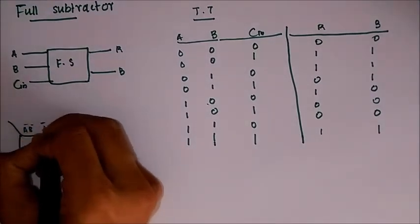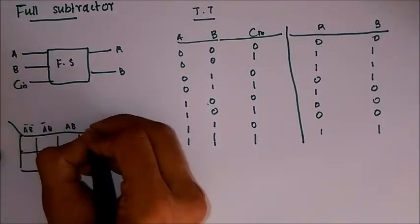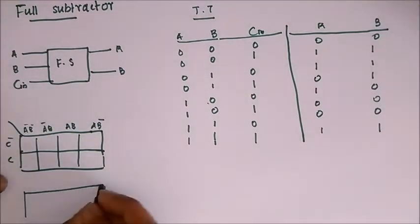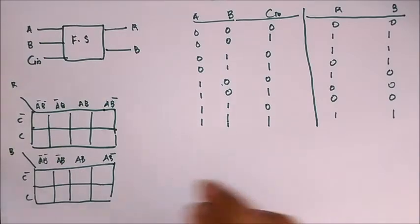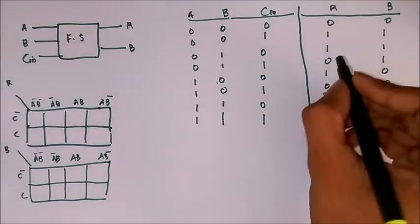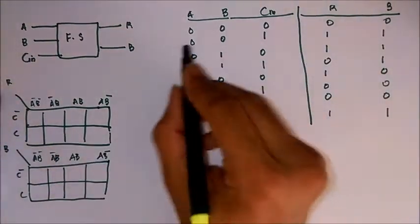A bar B bar, A bar B, A B, A B bar, C bar, C. Yeah, so two K-maps like this, one for result and one for borrow out.